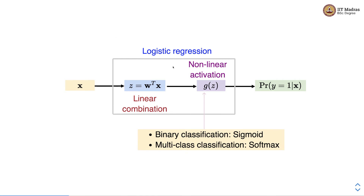We can view this in a neural network style fashion. The input is the feature vector x; we first perform the linear combination w transpose x, store the result in an intermediate variable z, and then pass z to the non-linear activation function, which gives us the probability of y belonging to class 1. Since this is a probability, the output is between 0 and 1. In binary classification, we use the sigmoid function as the activation. In multi-class classification, the only change is that instead of sigmoid, we use softmax as the non-linear activation function.